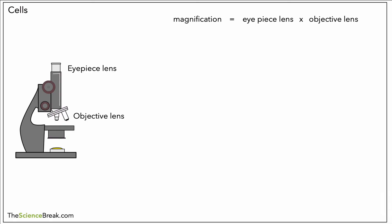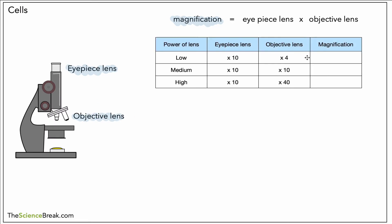The last little thing to do here is to work out what we call magnification using this little equation here. To do that we would multiply the eyepiece lens magnification times the objective lens magnification. Here's a little table with some numbers in. We've got the power of the lens - that just tells you how much magnification it has - so low, medium, and high eyepiece lens magnification and objective lens magnification.